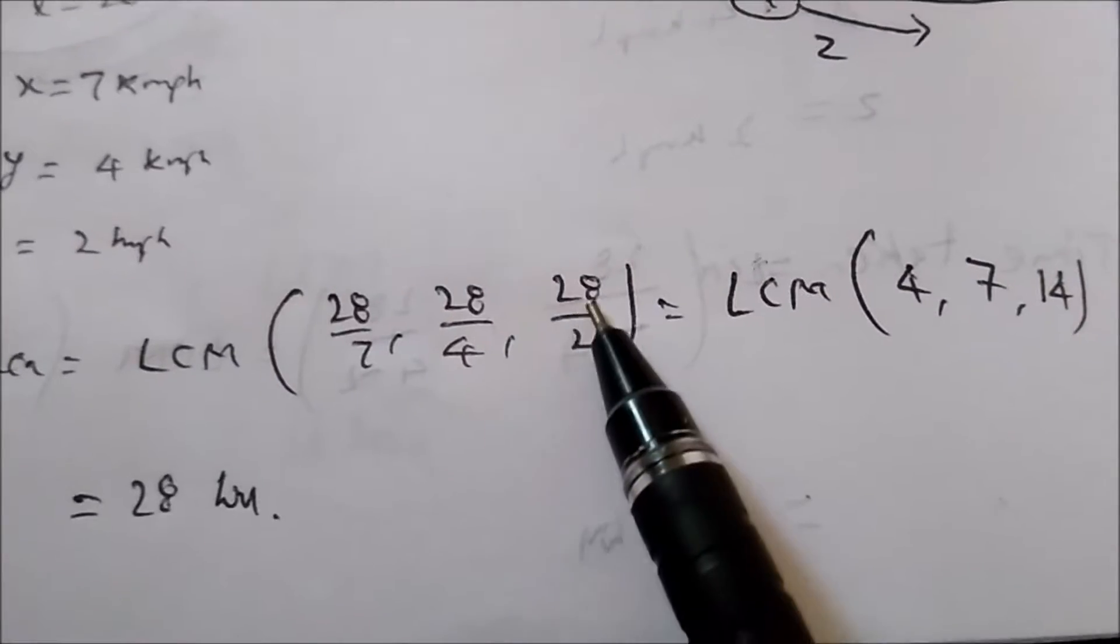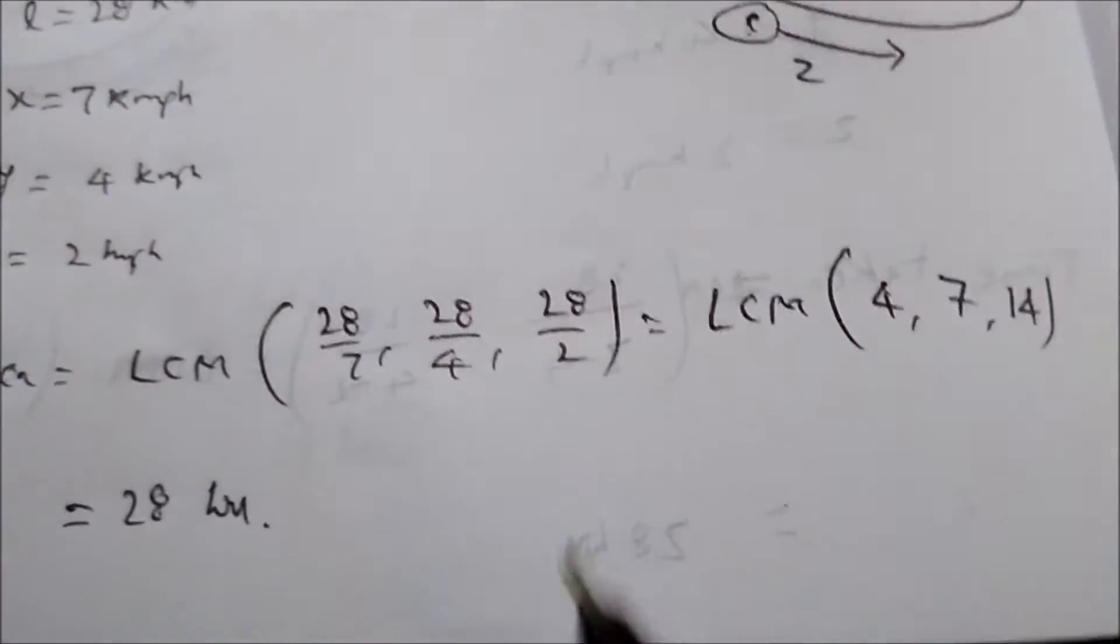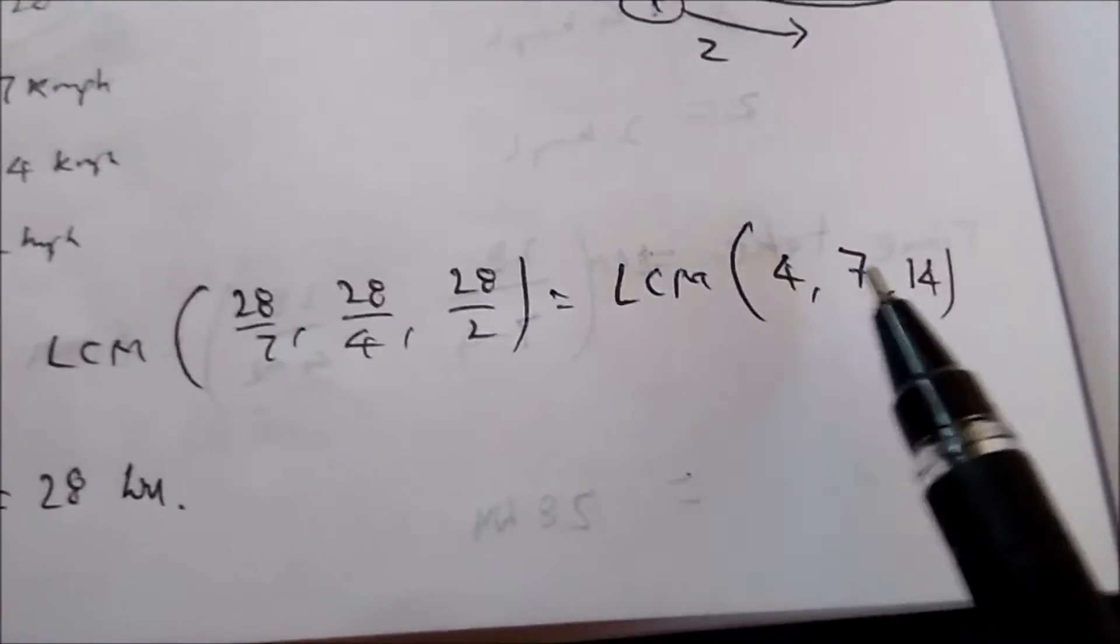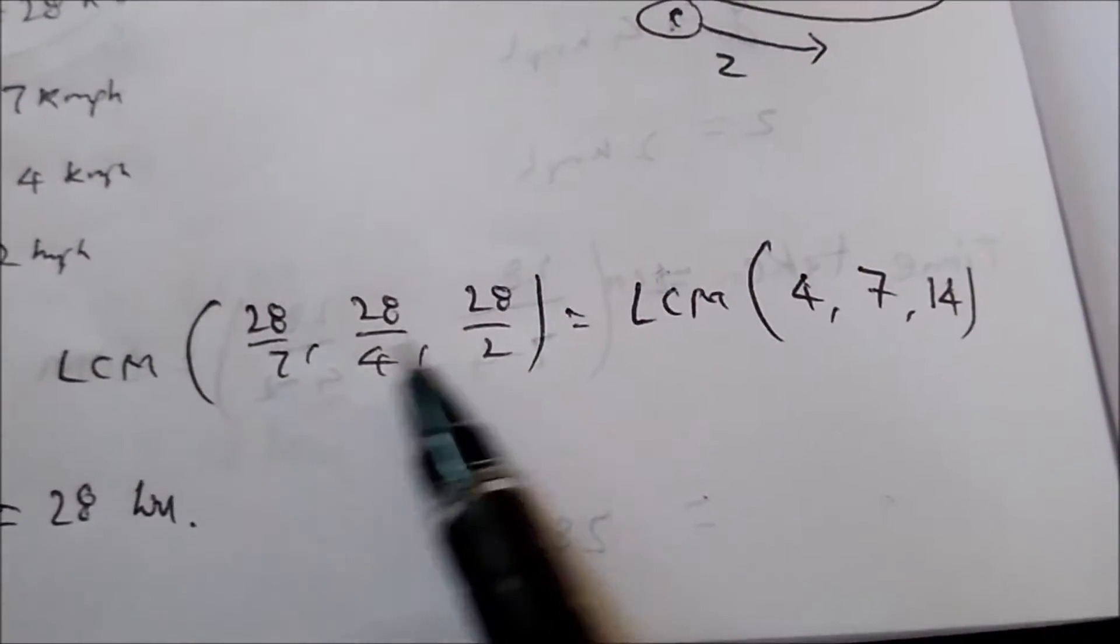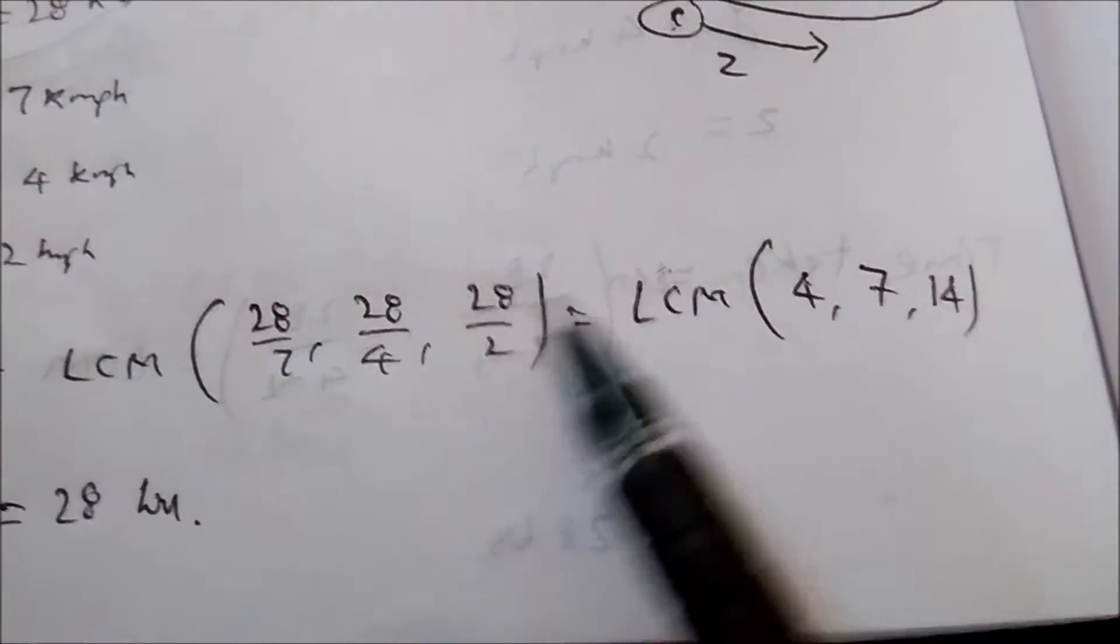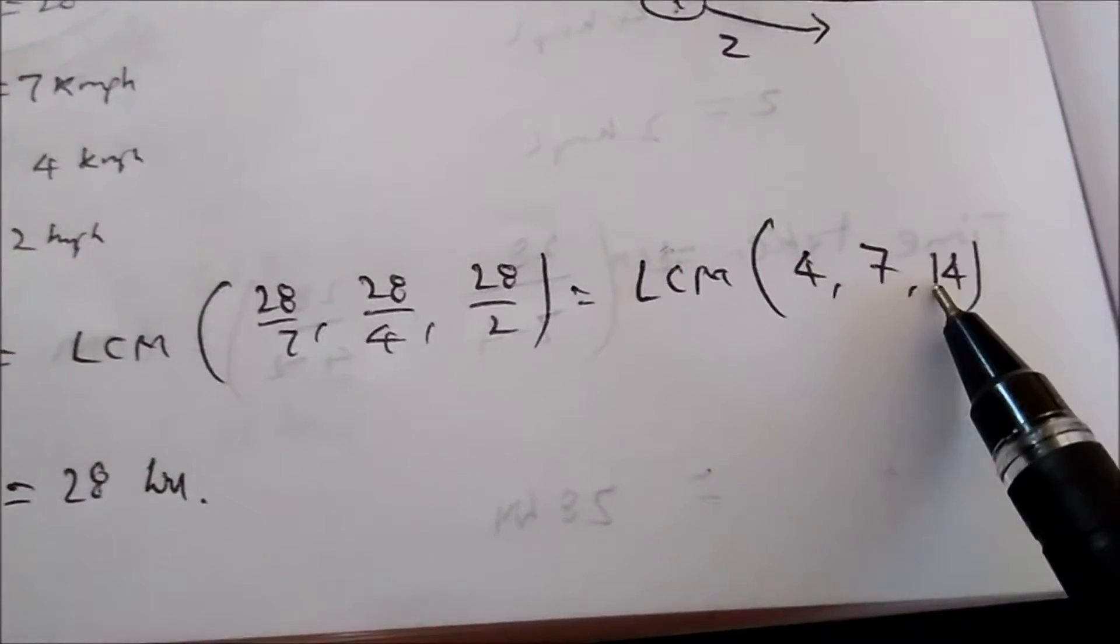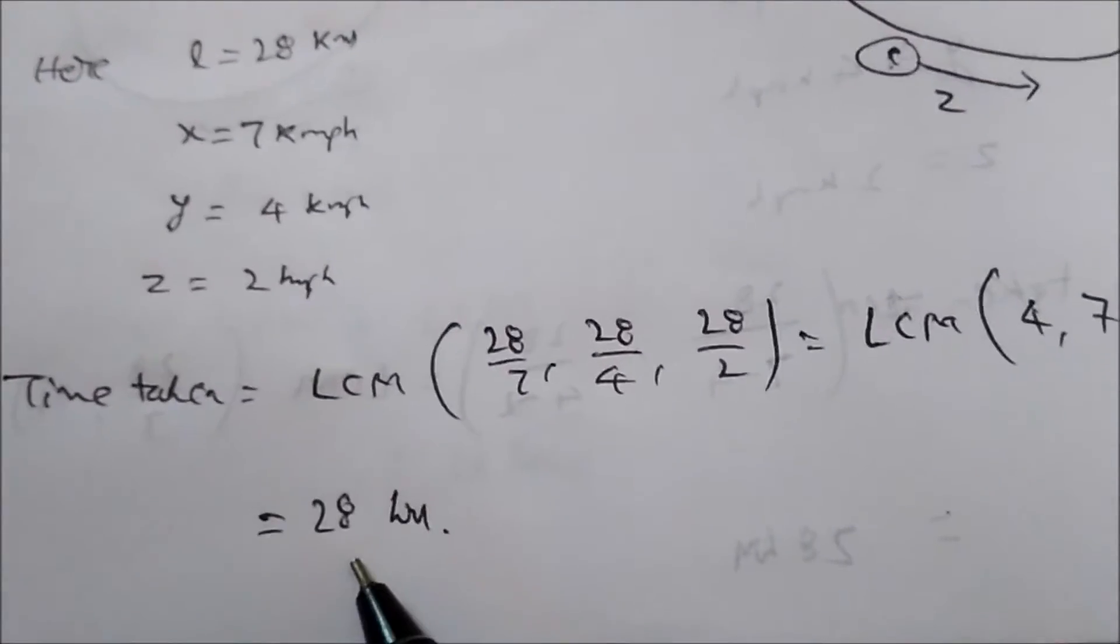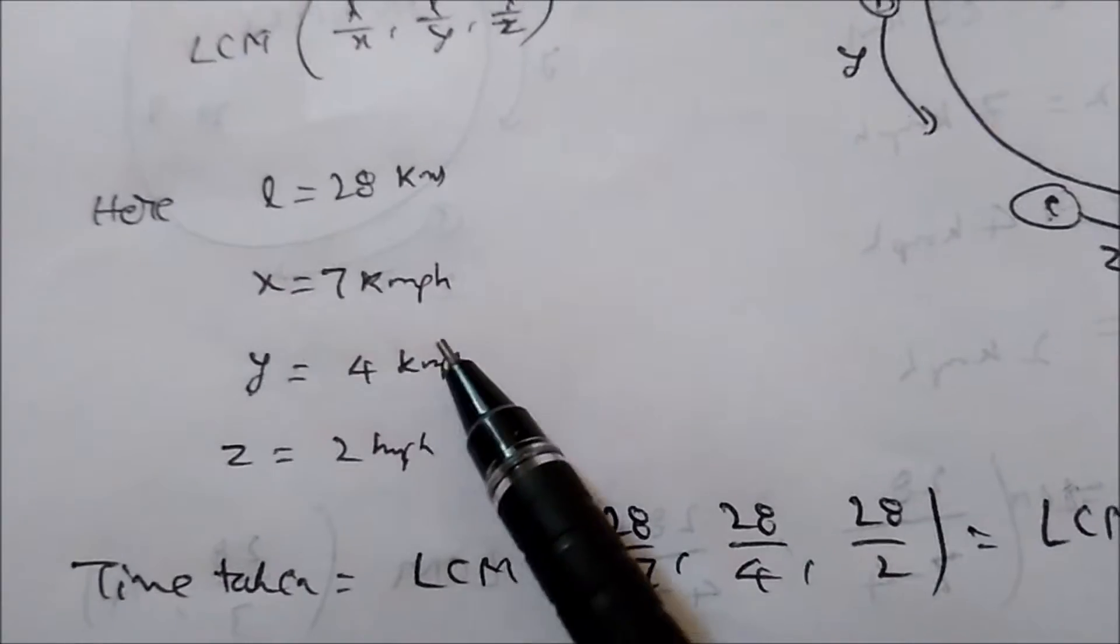Here this is the LCM of 4, 7, and 14. The LCM of 4, 7, 14 is 28, and the units which they have considered is kilometers per hour, so the time will be in hours.